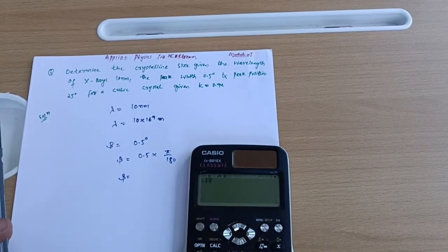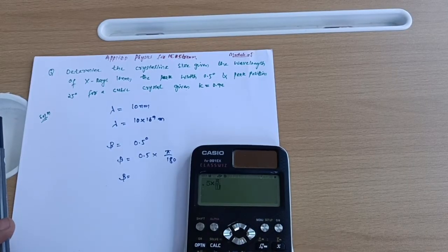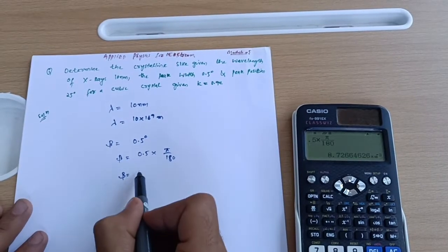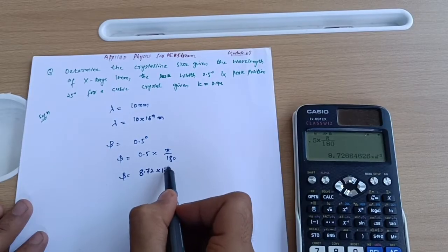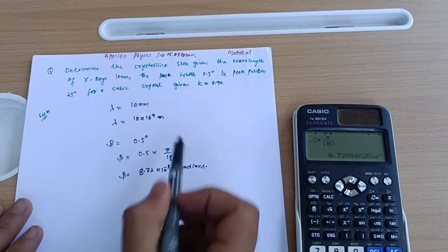So 0.5 × π/180 equals 8.72 × 10^-3 radians. This is beta. Another thing: peak position is given as 25 degrees, which is denoted by 2θ.